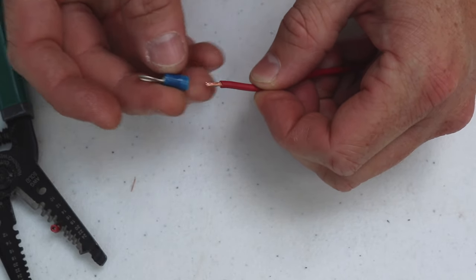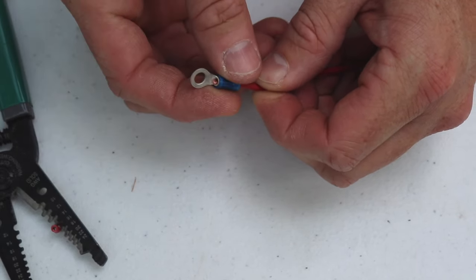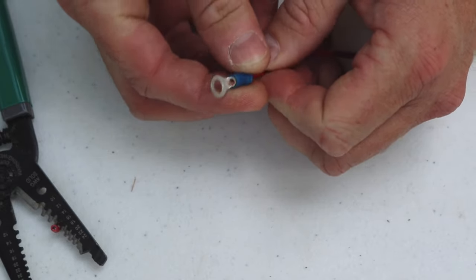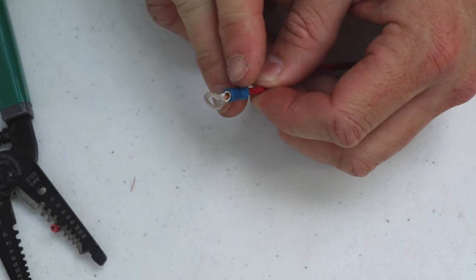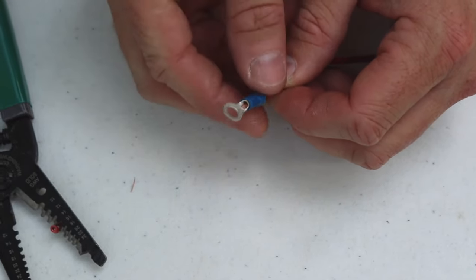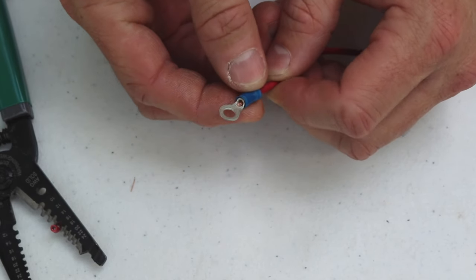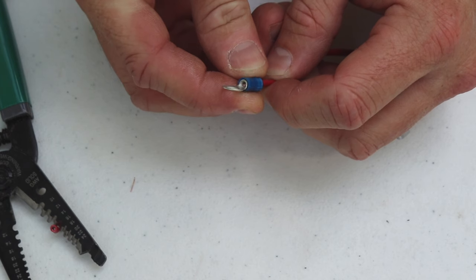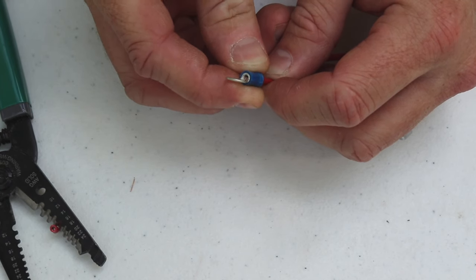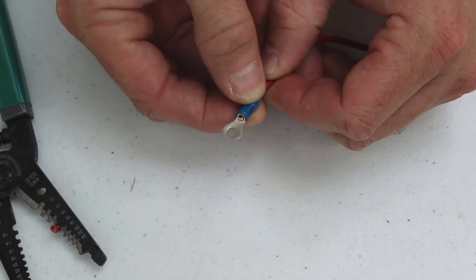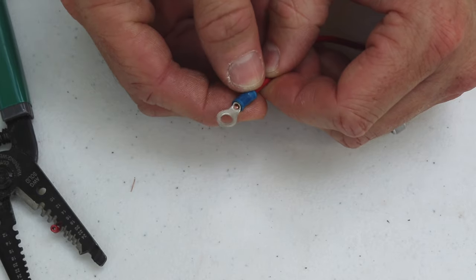We'll then take our connector and test fit it on the end, and I've cut this to the perfect length. You can see how there's a little bit of the wire sticking out of the end. That's perfect. You don't want too much and you definitely don't want it to be sucked in and not sticking out. You want just a little bit of stick out, about a sixteenth of an inch, just like we have there.